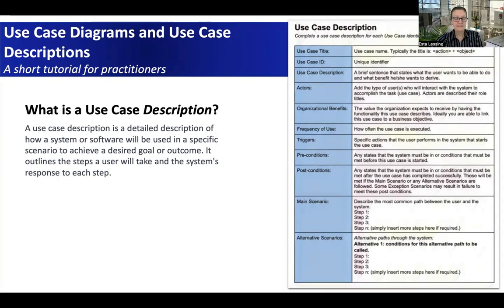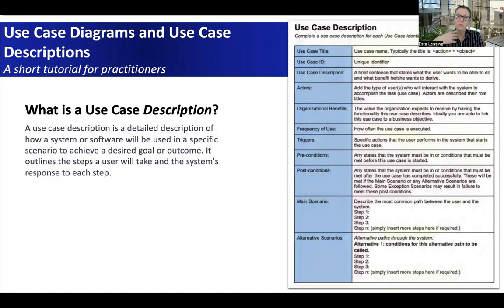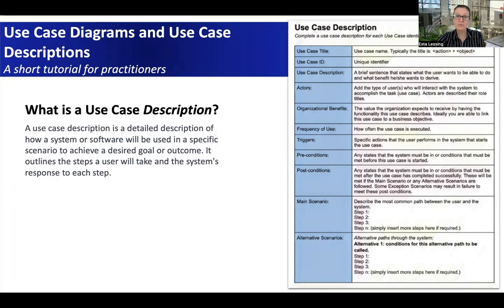What is the main scenario? This is really the crux of your use case description. It's about describing step by step what the user does, then what the system does, back and forth, as you work through and execute the use case. That is the 'happy scenario' — what you really expect in the ideal world and how you want it to work.